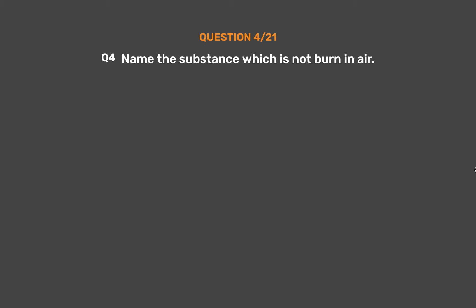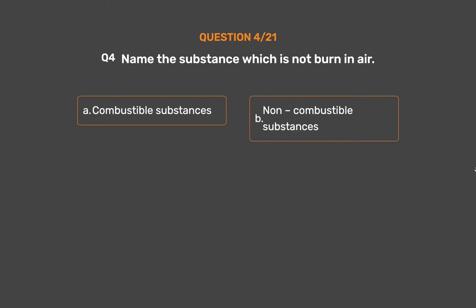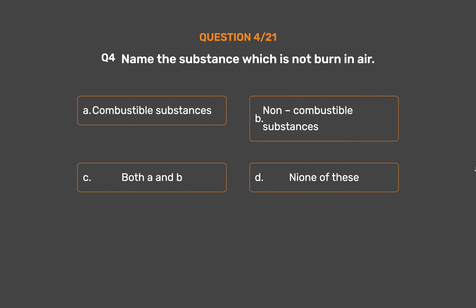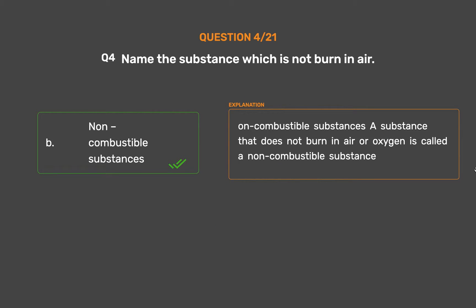Question number 4: Name the substance which does not burn in air. Option A: Combustible substances. Option B: Non-combustible substances. Option C: Both A and B. Option D: None of these. The correct answer is Option B: Non-combustible substances. A substance that does not burn in air or oxygen is called a non-combustible substance.